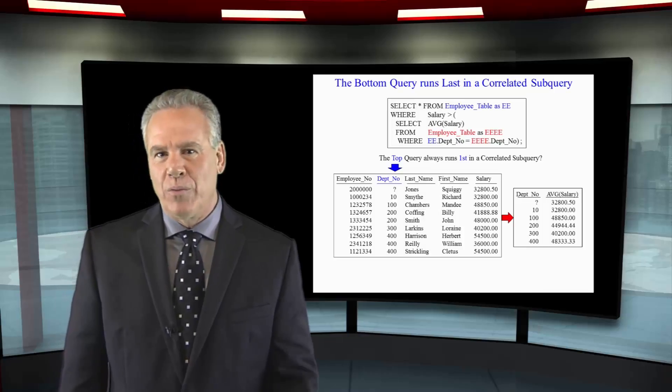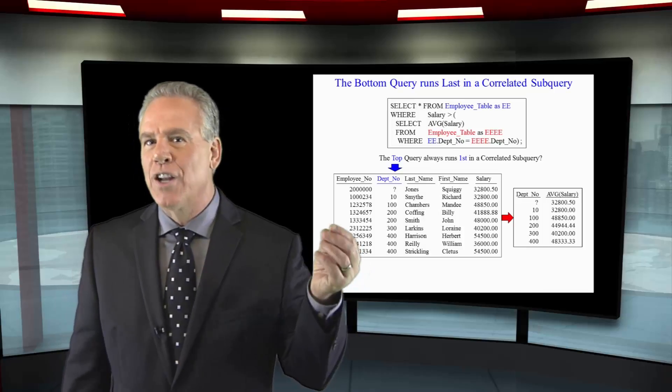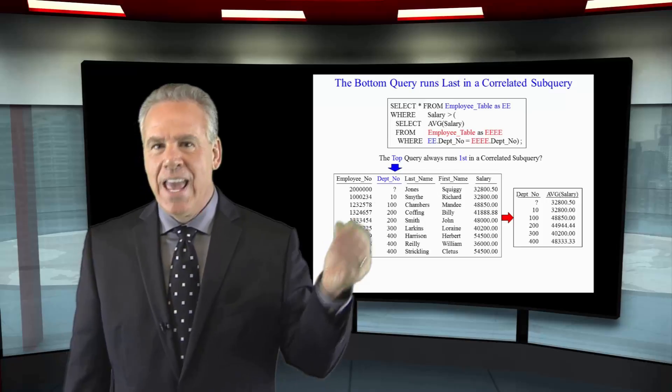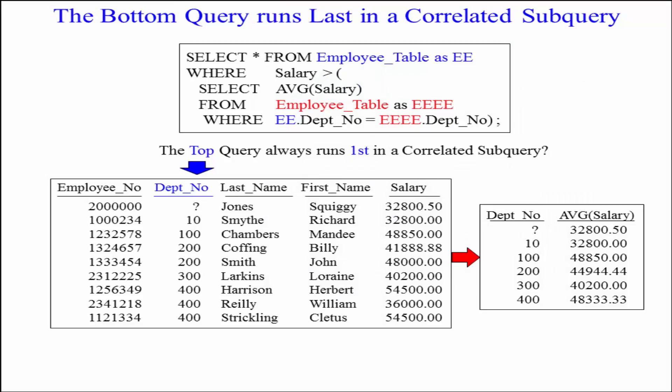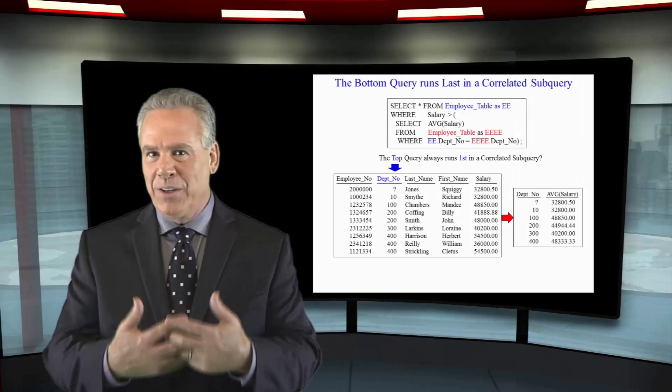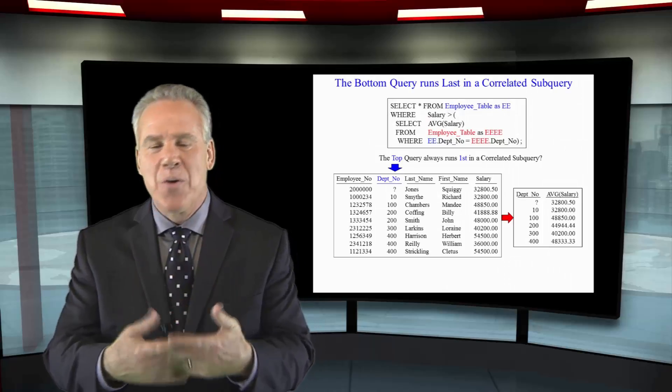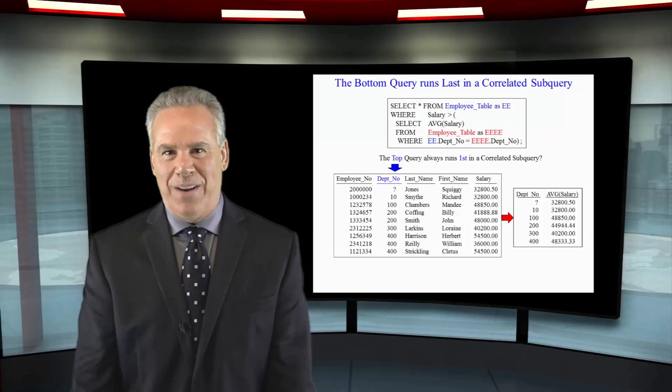Remember, the top query runs first in a correlated subquery, and it builds its nice little results — not the final result set — and then they run the bottom query, which you can see over here, one time for each distinct department. And now they can bring back all the people making greater than the average salary within their own department.